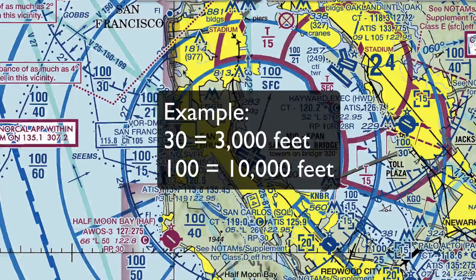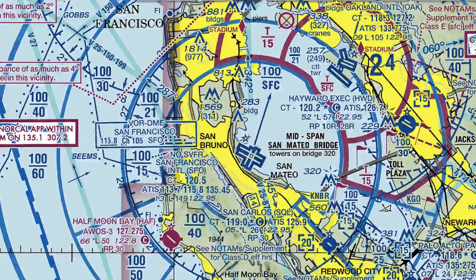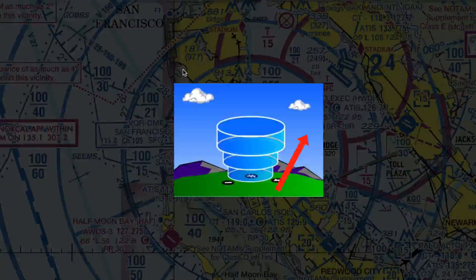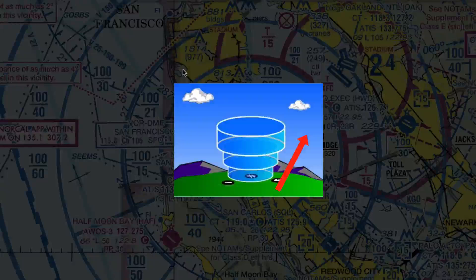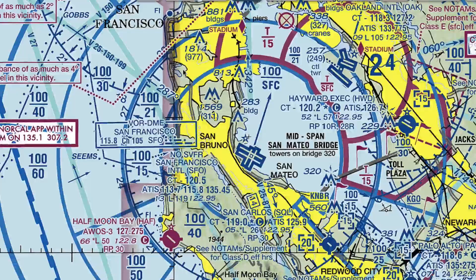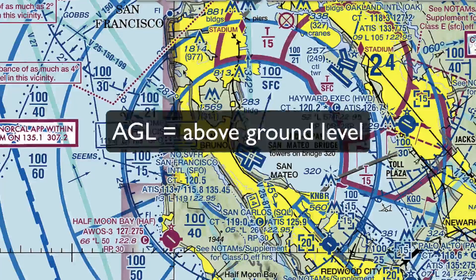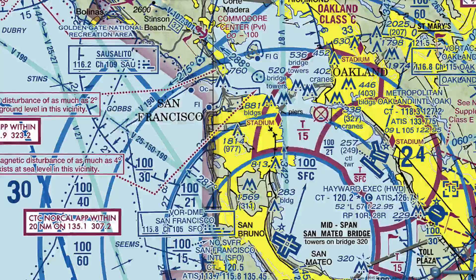Now think of Bravo airspace in the shape of an upside-down wedding cake, where each layer, or shelf, is a larger radius as you go further in altitude. Bravo airspace is controlled airspace, so you will need ATC authorization when flying within it. When flying drones in Bravo airspace, you need to understand how each shelf relates to AGL, or above ground level.